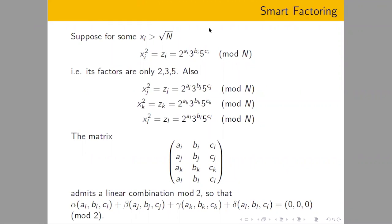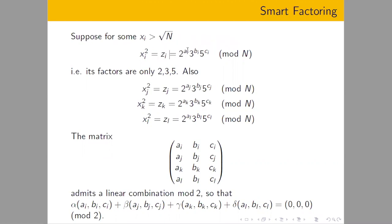Suppose that for some number x_i greater than the square root, it happens that if we compute x² modulo N, we get some number z that factors into powers of two, three, and five only. So z = 2^{a_i} · 3^{b_i} · 5^{c_i}. We can actually factor z. We try for every z computed this way whether it factors only into two, three, and five.